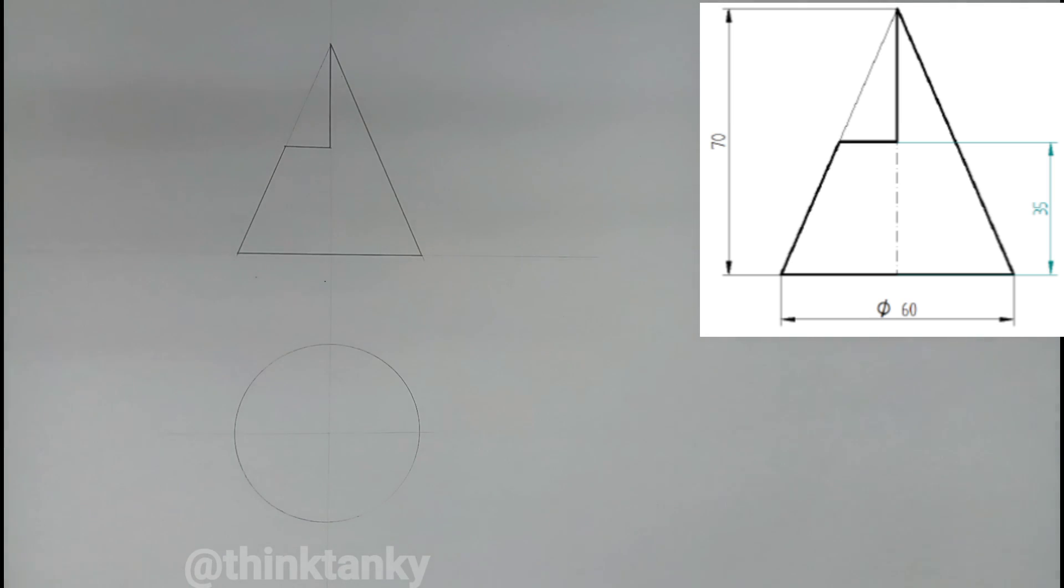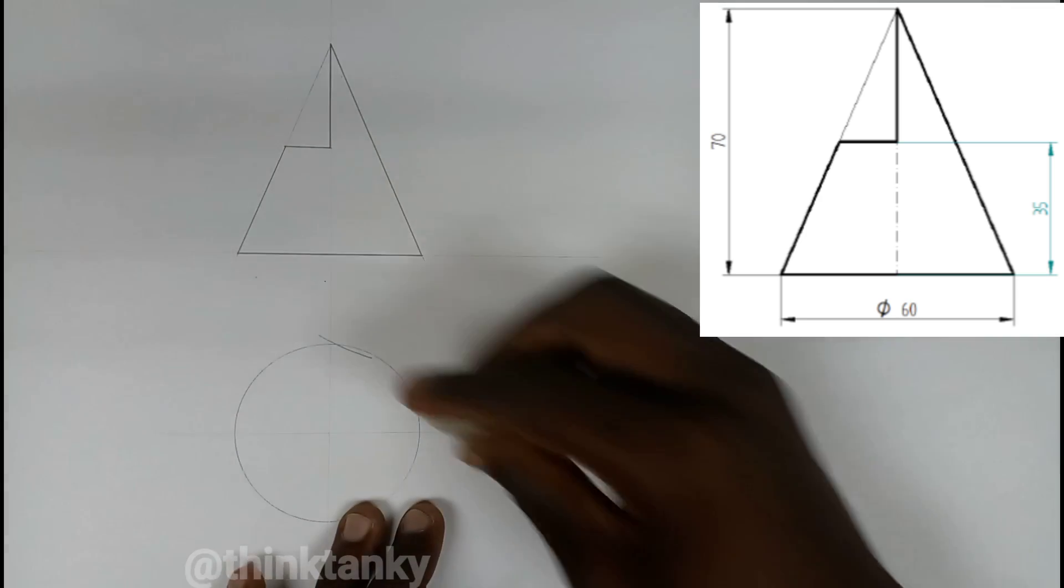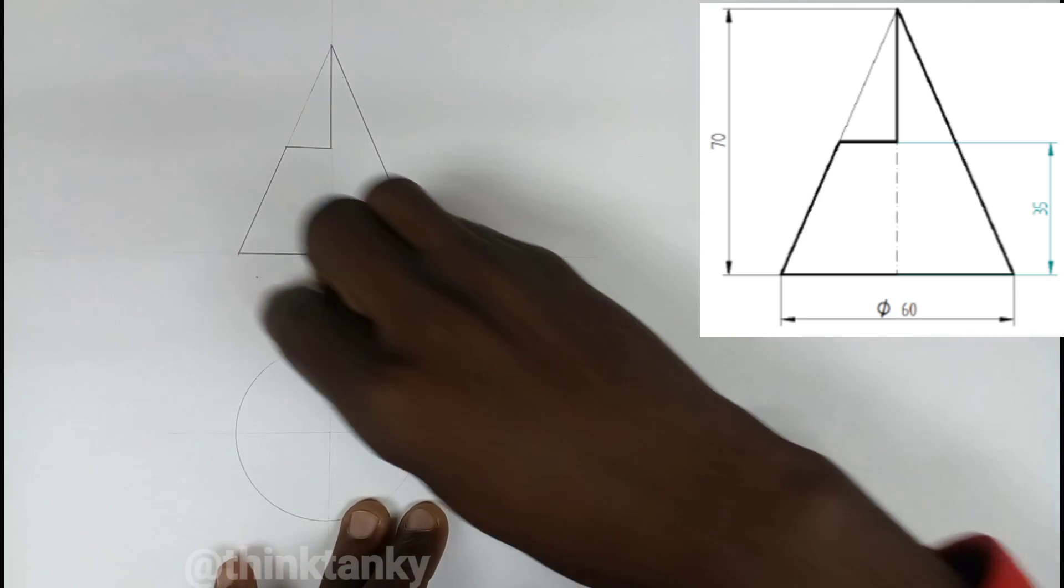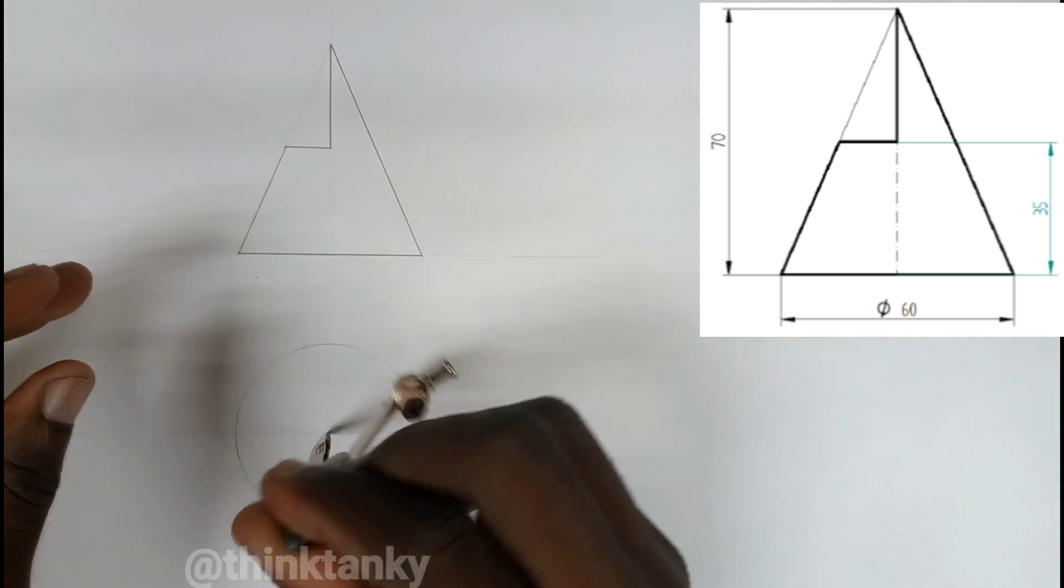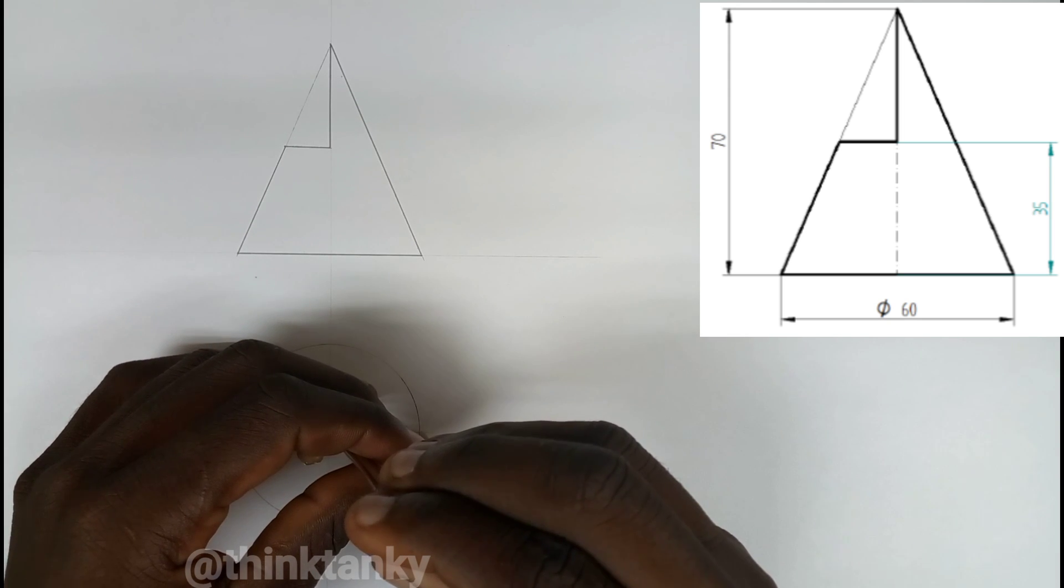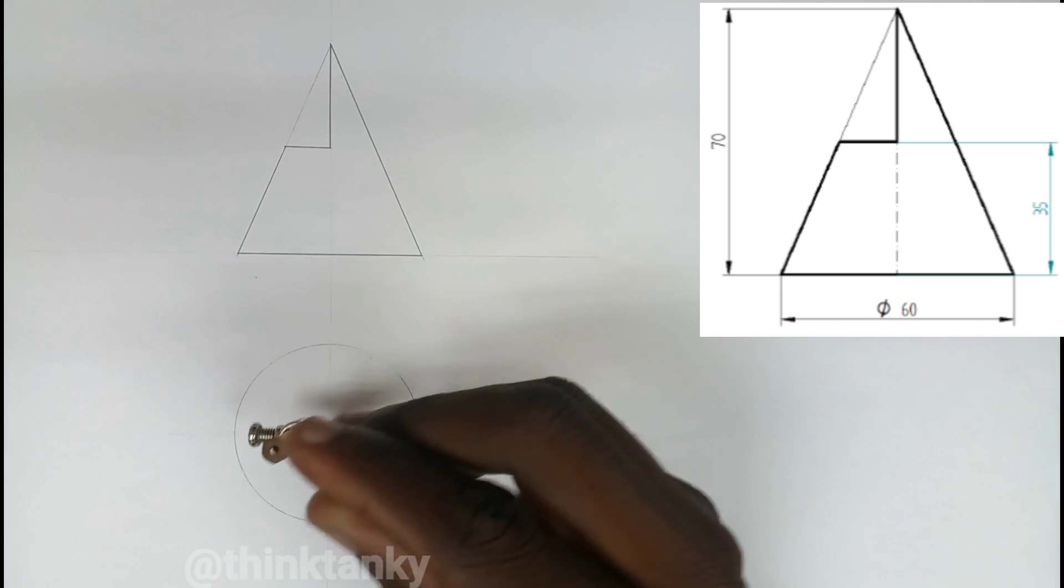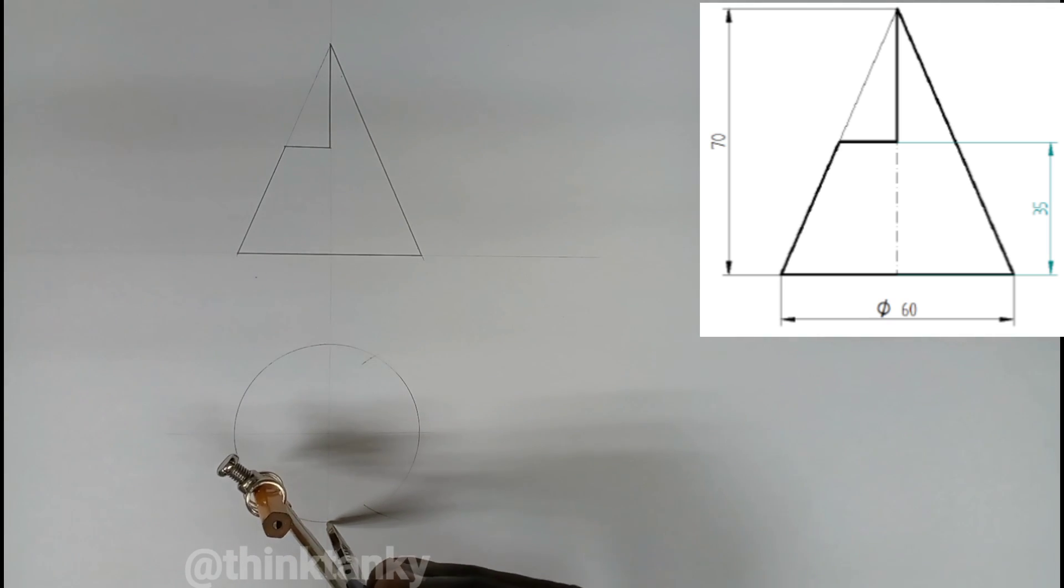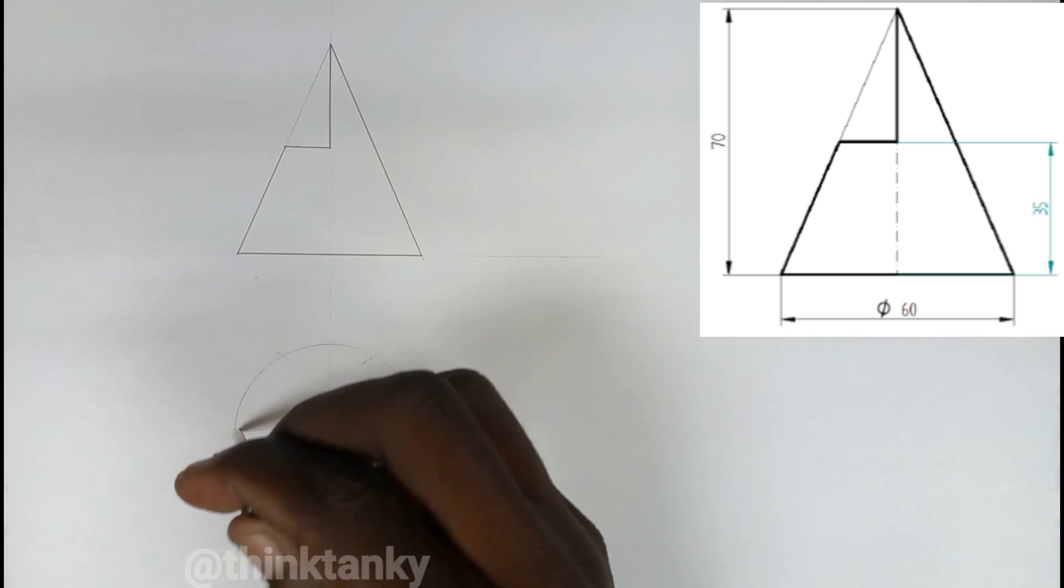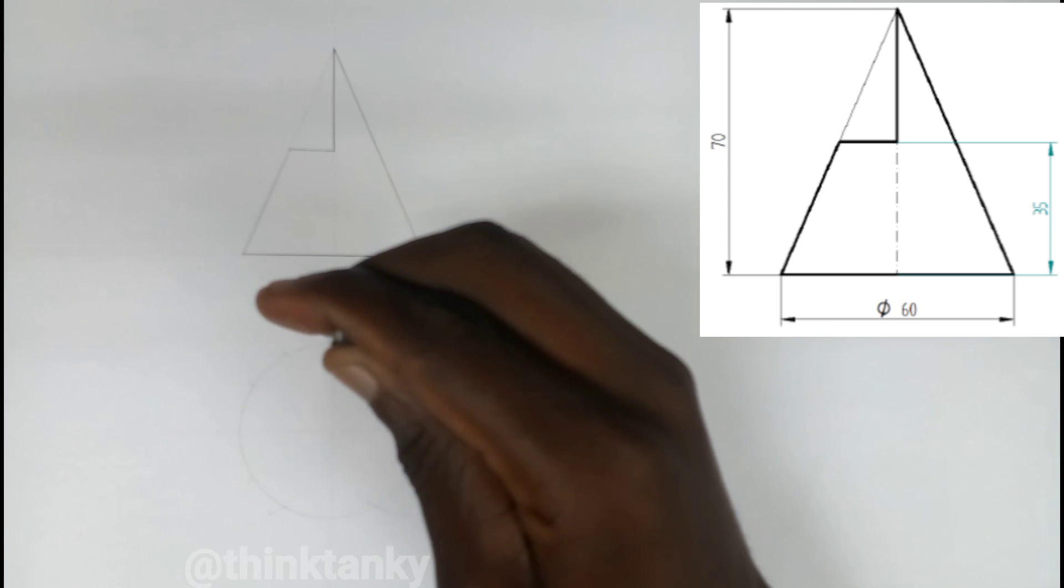Then after that, we're going to divide this circle into 12 equal parts. So this is the radius, starting at a point, strike an arc. Come to this point, strike an arc. Come to this point, strike an arc, and to this point, strike an arc.